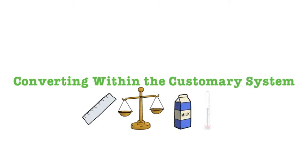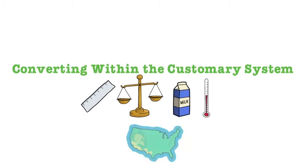Converting within the customary system. The customary system is a set of measurements used to measure length, weight, capacity, and temperature. The United States is one of three countries in the world that uses the customary system instead of the metric system.